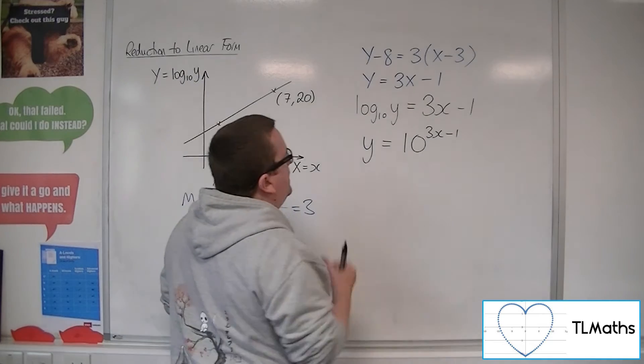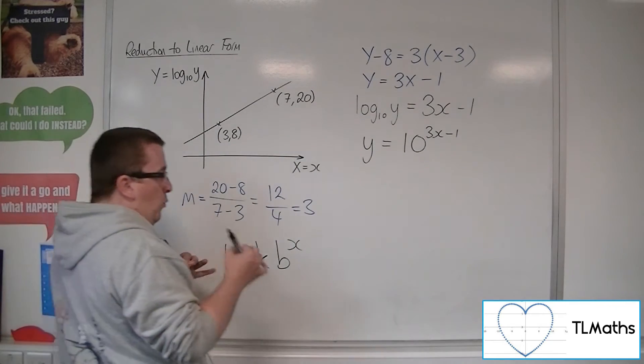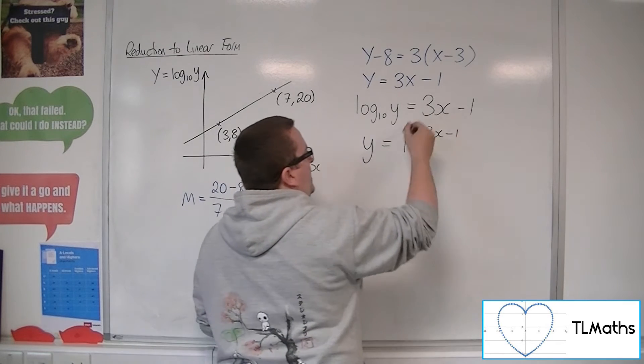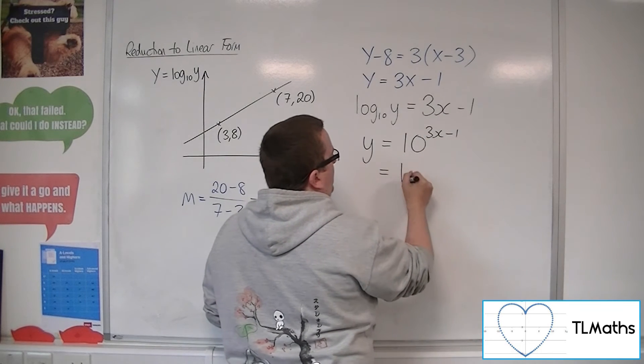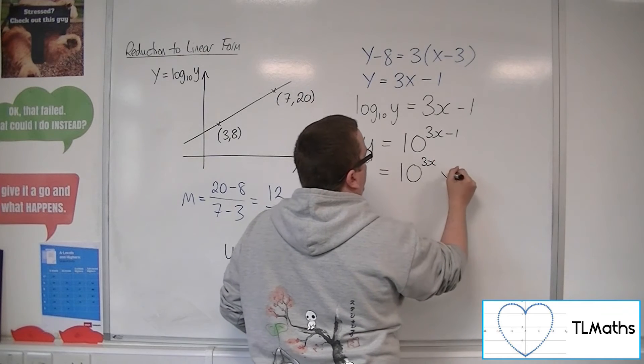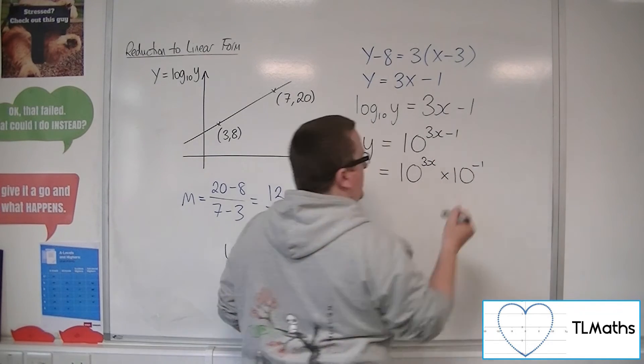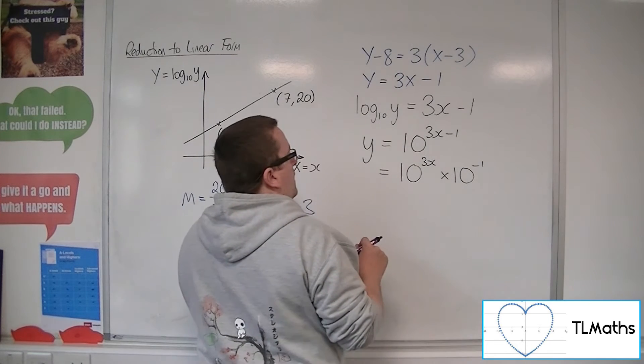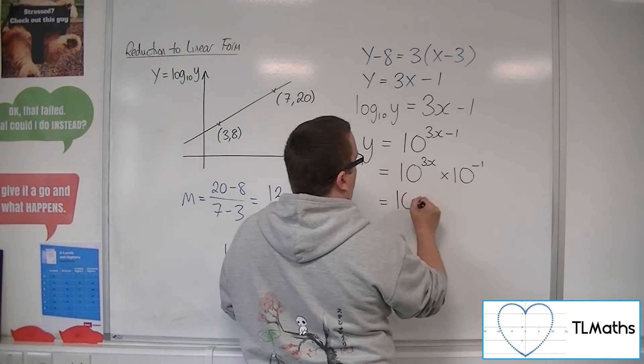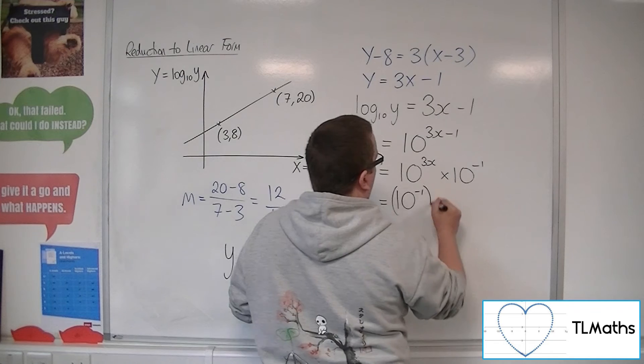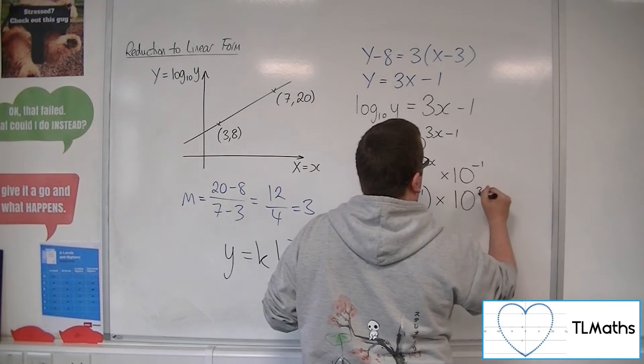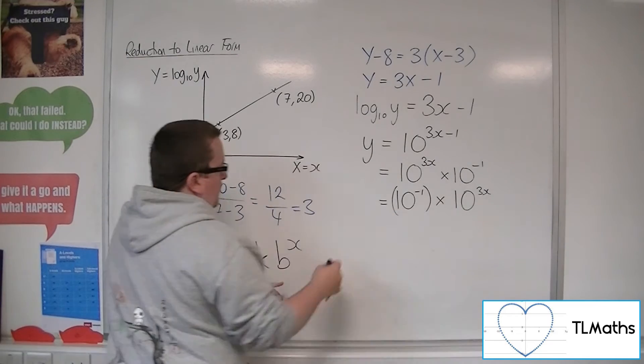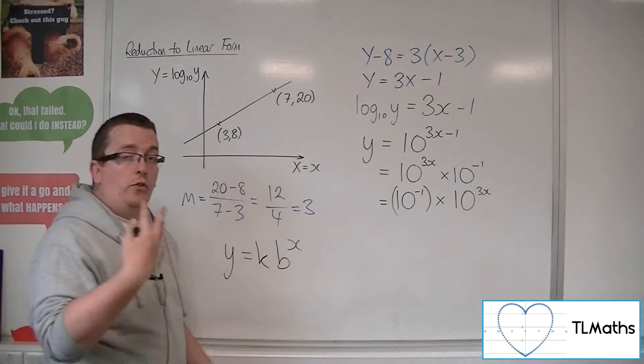So what I can then do is I can say to myself, well, if I manipulate this, this is 10 to the 3x times 10 to the minus 1. So if that's the case, then I could reorganize this to say it's 10 to the minus 1 times 10 to the 3x. Now, I've got what appears to be the k, but I don't have b to the x because I've got 10 to the 3x.